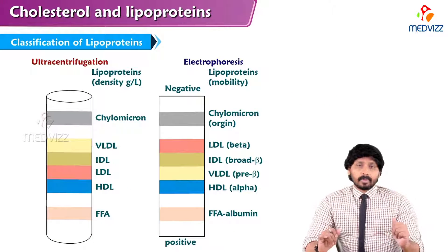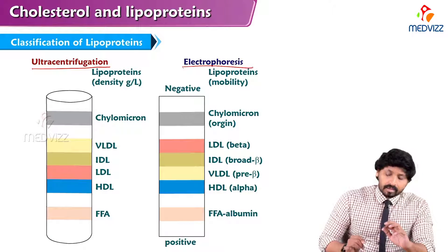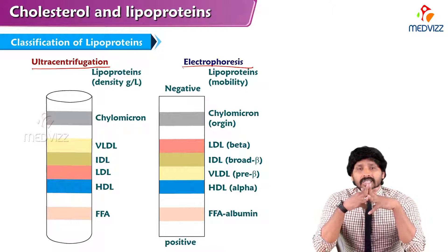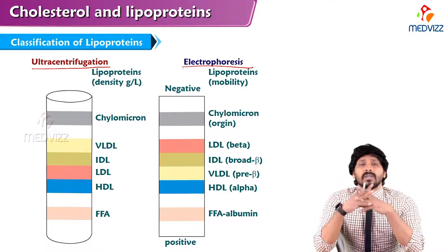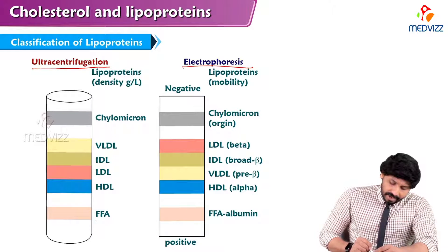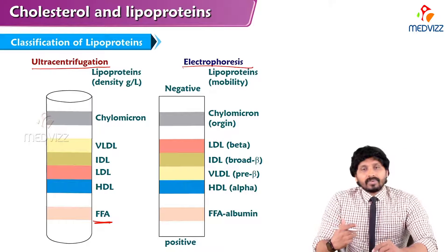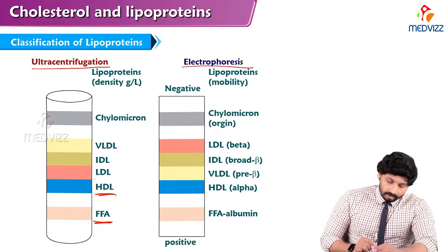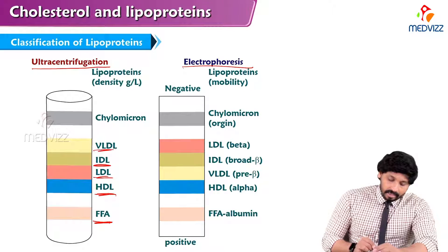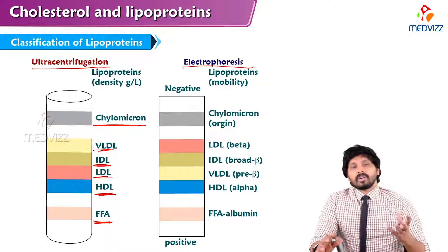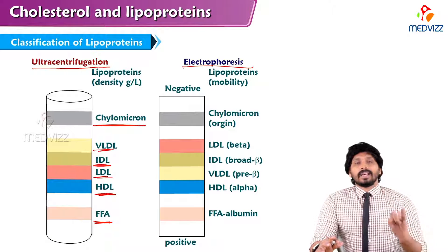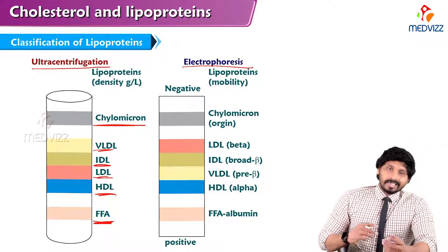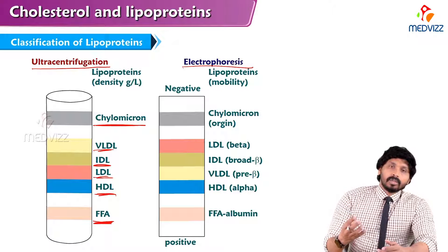We will see the classification of lipoproteins by two main methods: ultracentrifugation and electrophoresis. Based on weight and size, there is segregation of these lipoproteins. Free fatty acids are heavy by molecular weight, so they sediment first in ultracentrifugation, followed by HDL, then LDL, IDL, VLDL, and lastly chylomicrons — because chylomicrons are light in nature, have less density, and are the last substance to be sedimented.